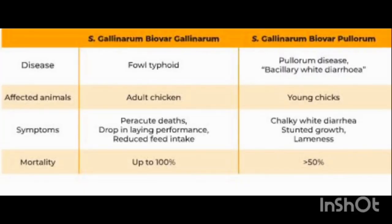Regarding the differential diagnosis of fowl typhoid, we have pullorum disease, also known as bacillary white diarrhea. Pullorum disease is mainly a disease of young chicks, while fowl typhoid is mainly a disease of adult chickens. In adult chickens, fowl typhoid causes peracute death, sudden death, drop in egg production, and reduced feed intake. Pullorum disease in young chicks causes chalky white diarrhea, stunted growth, and lameness. Fowl typhoid can cause up to 100% mortality, while pullorum disease can cause 50% mortality.